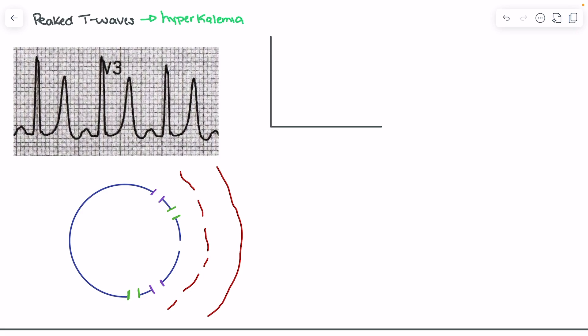What we're seeing here is a peaked T wave. One of the rules of thumb is if we have a T wave that's greater than half the size of the QRS complex, that is typically indicative of a peaked T wave — and we do see a peaked T wave here.